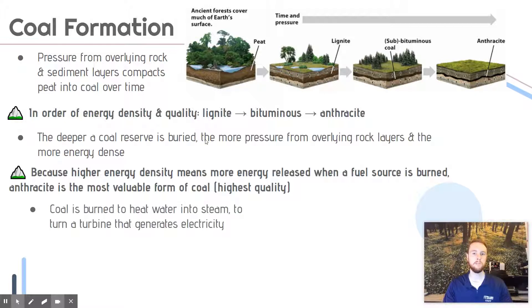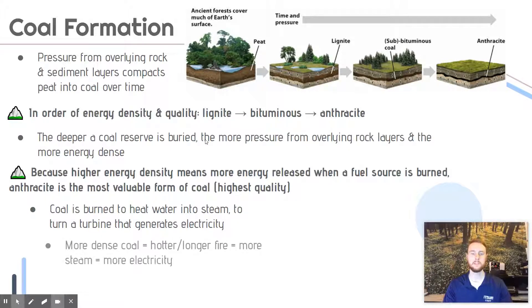What we do with coal is burn it. The energy released is primarily used to heat water into steam. That steam is forced through a tunnel that turns a turbine, and that turbine powers a generator which makes electricity. The number one use of coal globally is electricity production. The more dense the coal, the hotter and longer it burns, meaning it can produce more electricity — which is why it's more valuable.